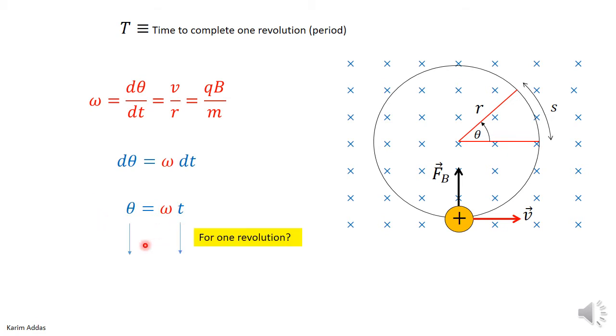If you put the angle for one complete revolution and the time for one complete revolution, the time is T and the angle is 2π.